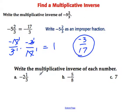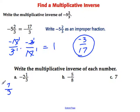Here are a couple for you to try. Let's do one of these together and then you can try the other two — pause the video and try them on your own. For letter A, we write it as an improper fraction: the denominator stays the same, multiply the denominator and the whole number to get 6, then add 1 to get 7, and the sign stays negative. So the multiplicative inverse is negative 3 sevenths — we just flip it over.